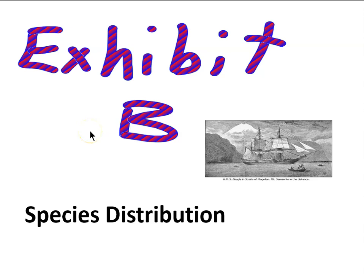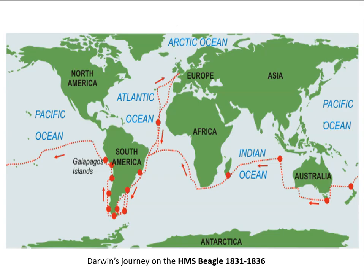In this lesson we'll examine another category of evidence that Darwin collected in favor of the idea that species can change. We'll call it Exhibit B: Species Distribution. On Darwin's five-year journey around the world he had occasion to stop at many different kinds of places — in South America and Australia, for example — and he cataloged the various plants, animals, and geology of the places he visited. So he was in a good position to document the different kinds of species and their relative locations on the planet.